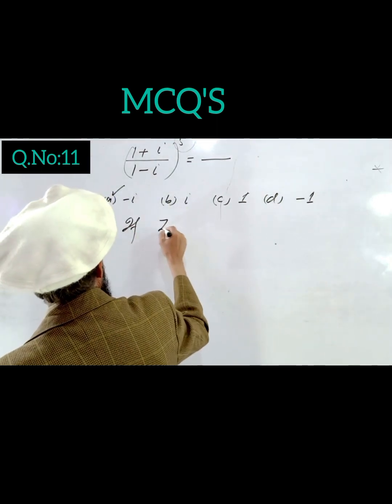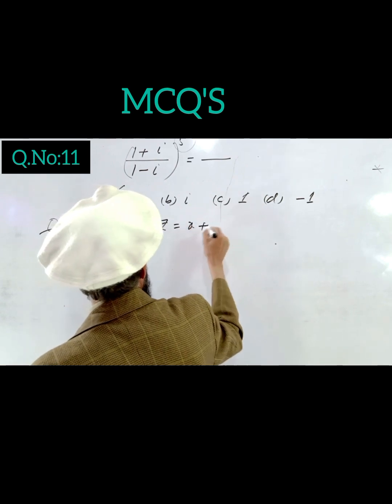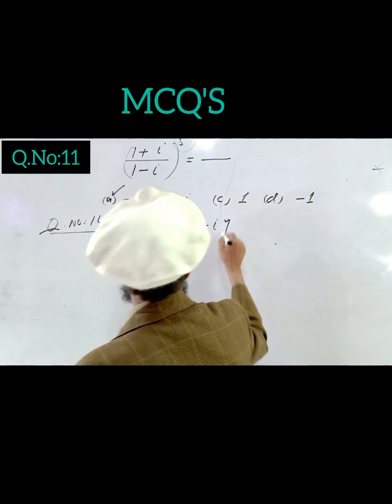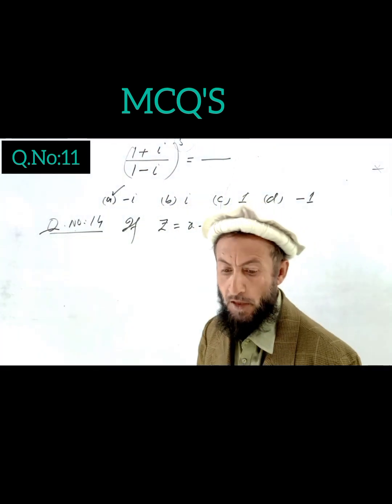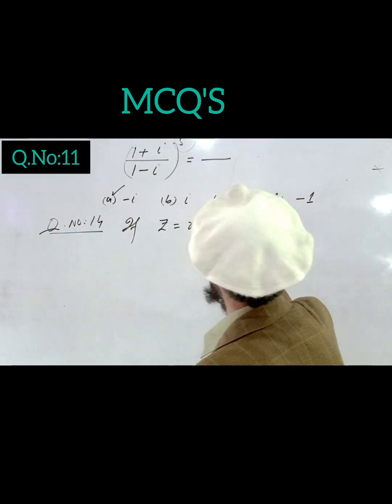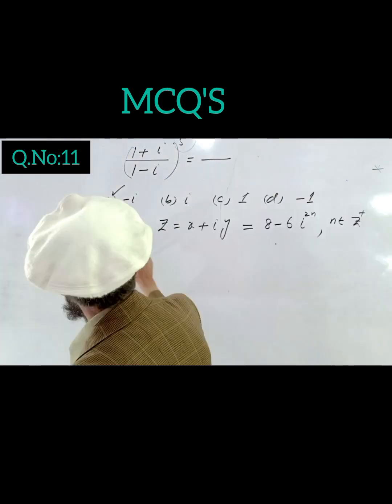Question 14: If z equals x plus iota y is any complex number, find the imaginary part.